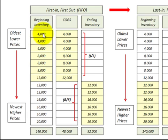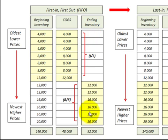The tables are going to be laid out with our beginning inventory — that's all the inventory included for the period. Then we have our cost of goods sold, which is the inventory that we used for the period. And then our ending inventory — that's what remains after we subtract the cost of goods sold from the total inventory we have for the period.